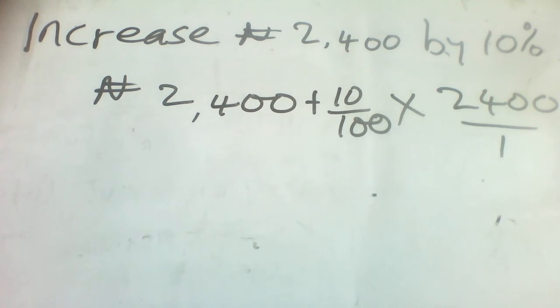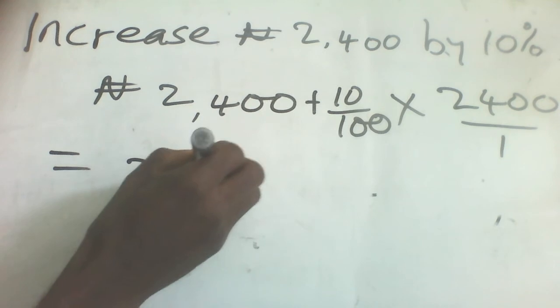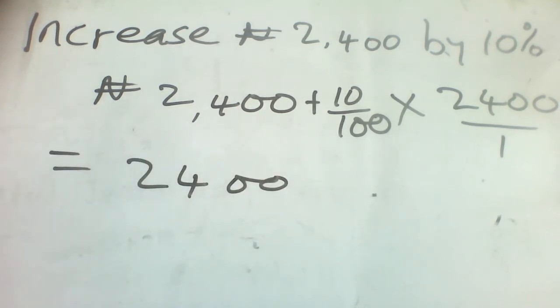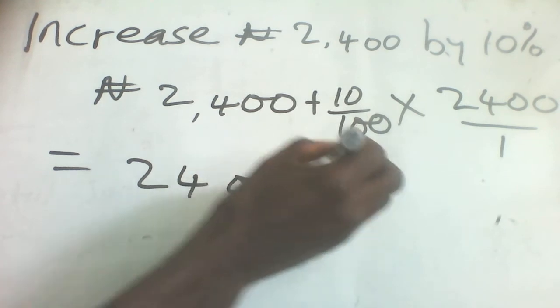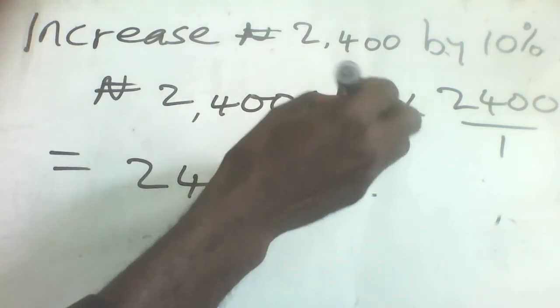So you are going to have 2,400 plus 10 divided by 100. If I multiply this, I am going to have 2,400 plus 240.